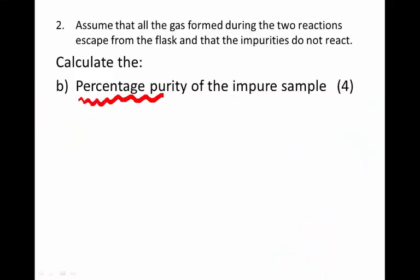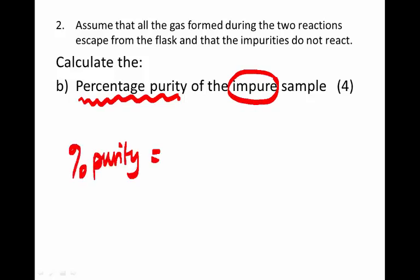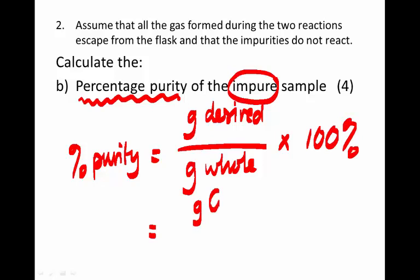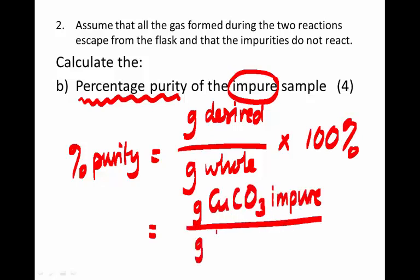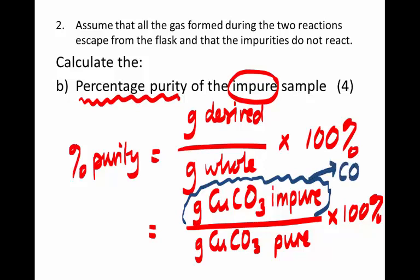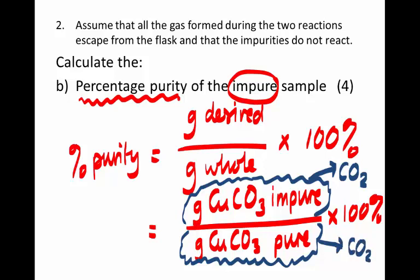Now we are asked to calculate the percentage purity of the impure sample. Percent purity means the mass of the substance we are interested in divided by the mass of the whole, times 100%. There is a simpler way: the mass of copper carbonate actually present in the impure sample is related to the amount of carbon dioxide it will produce, just as the mass of copper carbonate in the pure sample is related to the amount of CO₂ it produces.